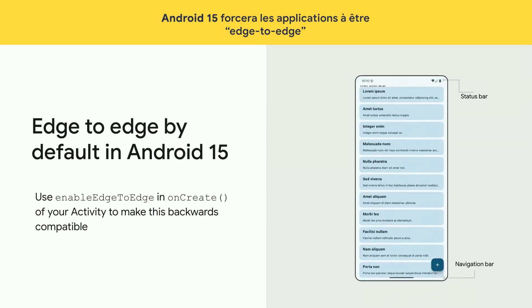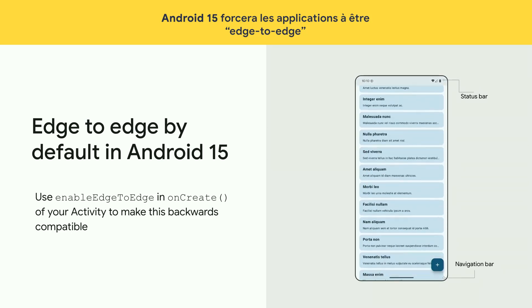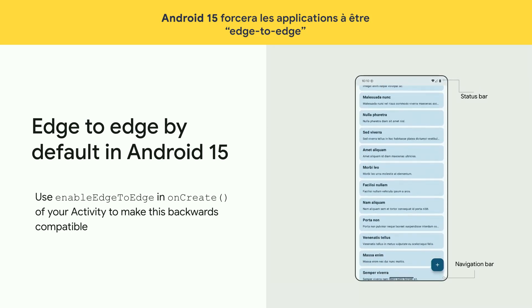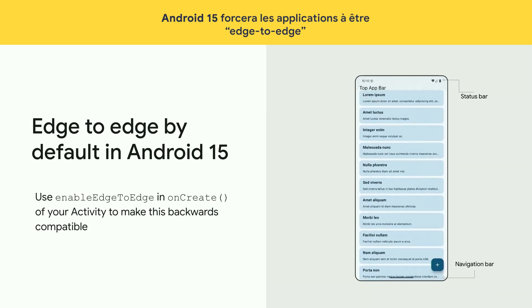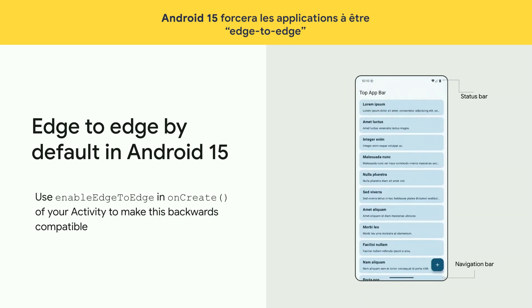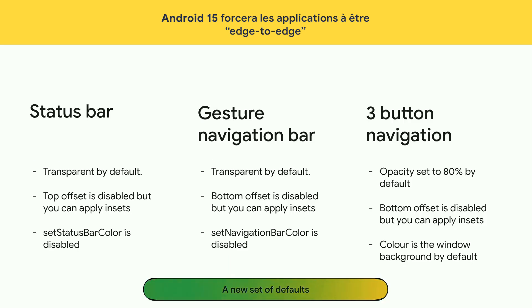Starting in Android 15, apps will be edge-to-edge by default after they target SDK 35. We want to give you simpler defaults, so your status bar, gesture, and three-button navigation bar will be simple.